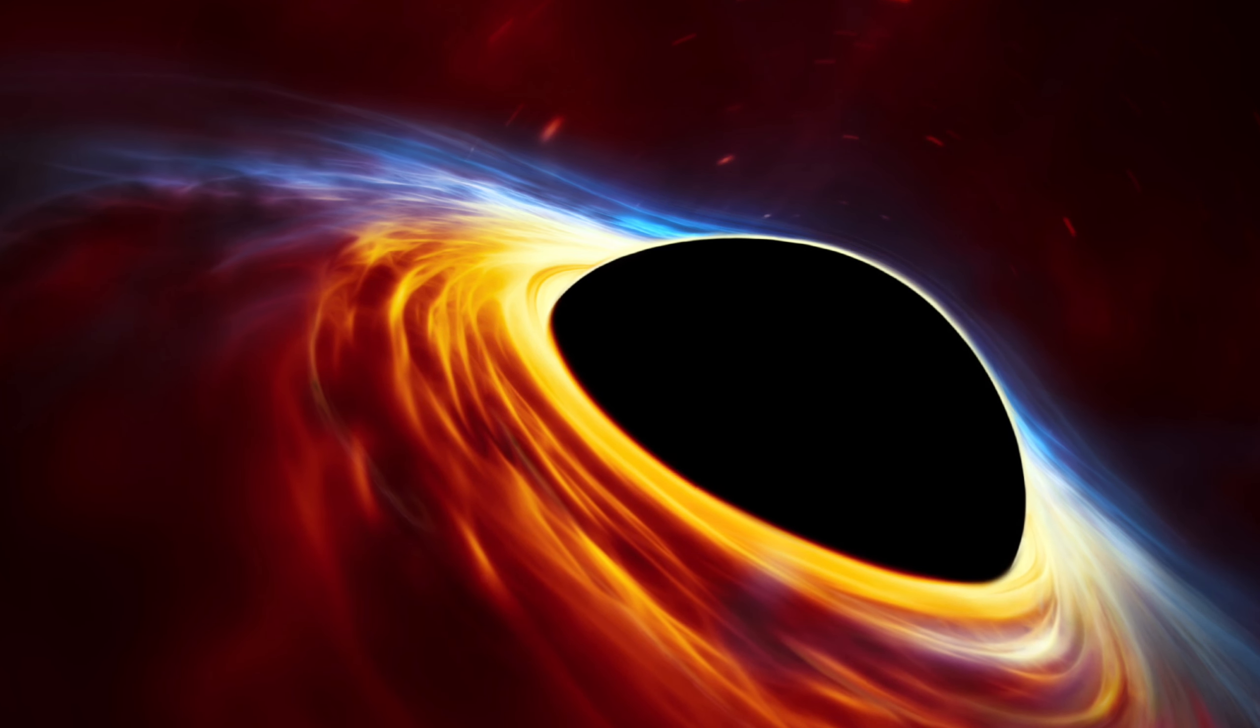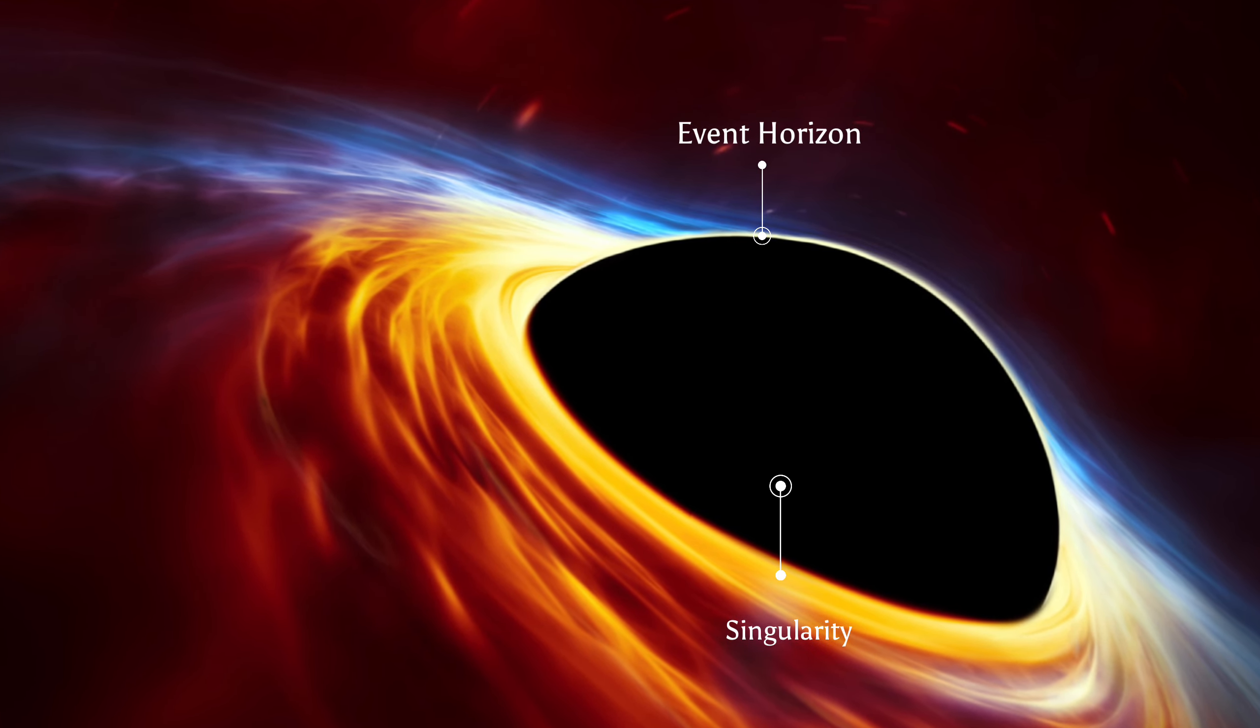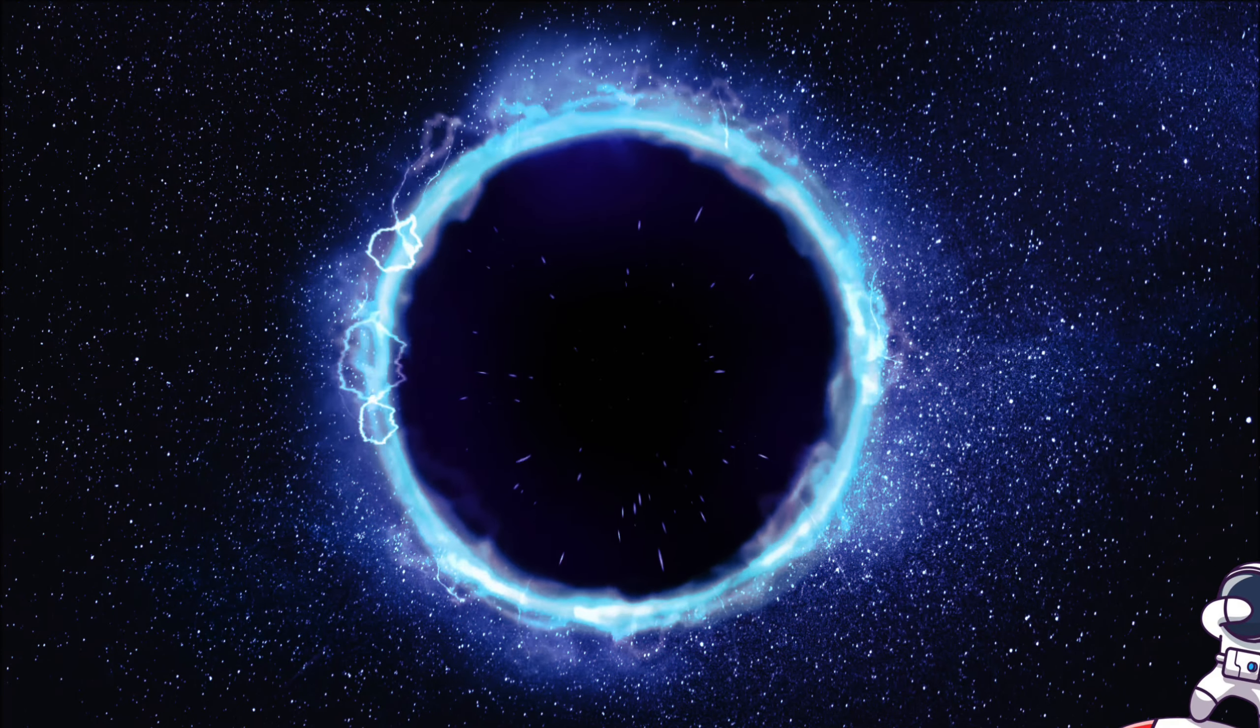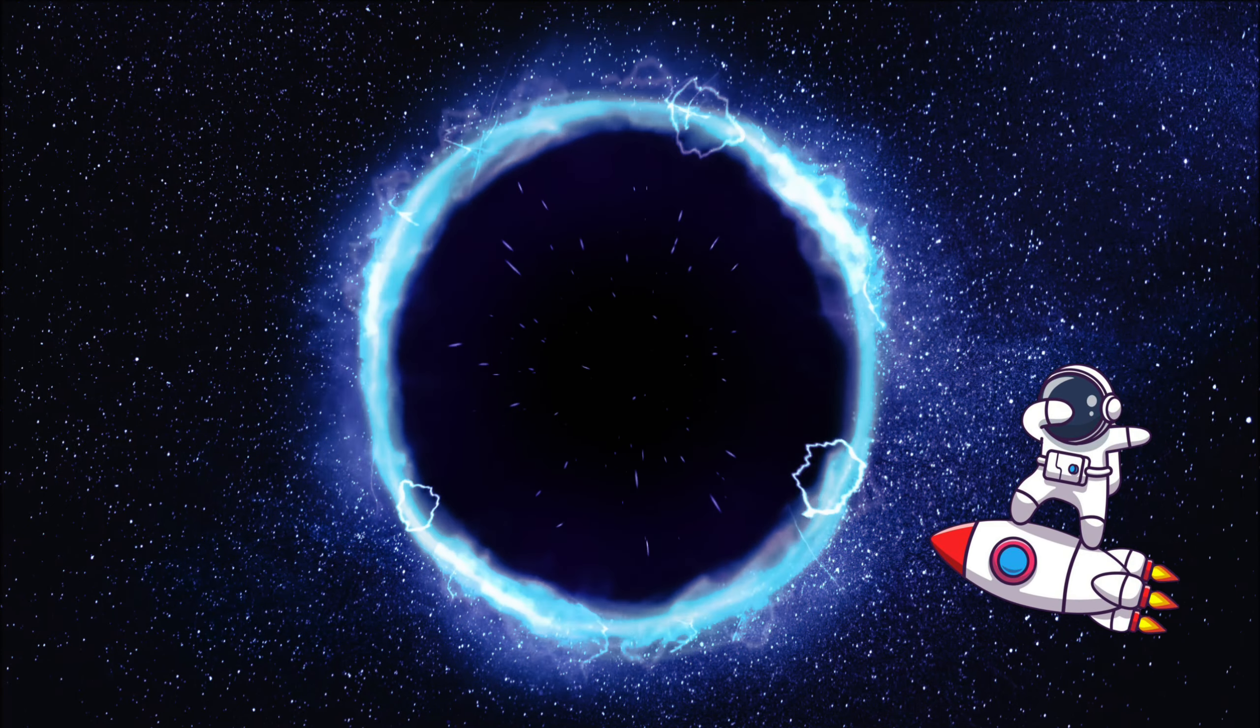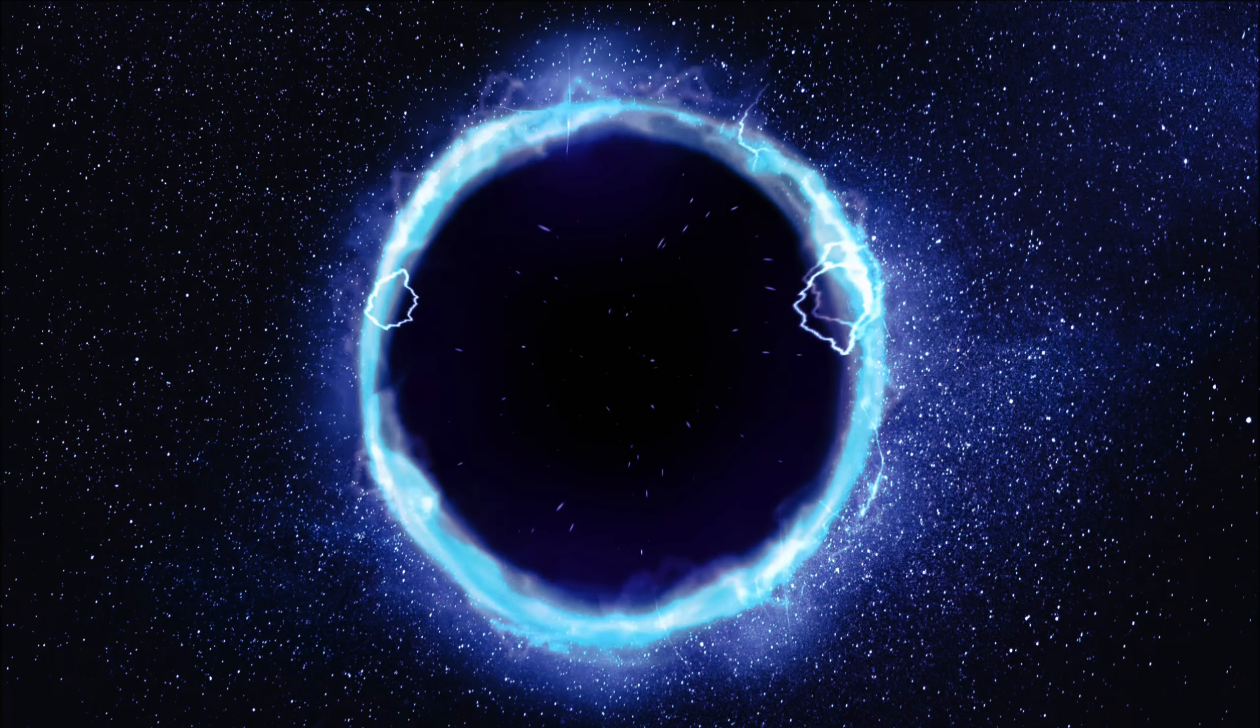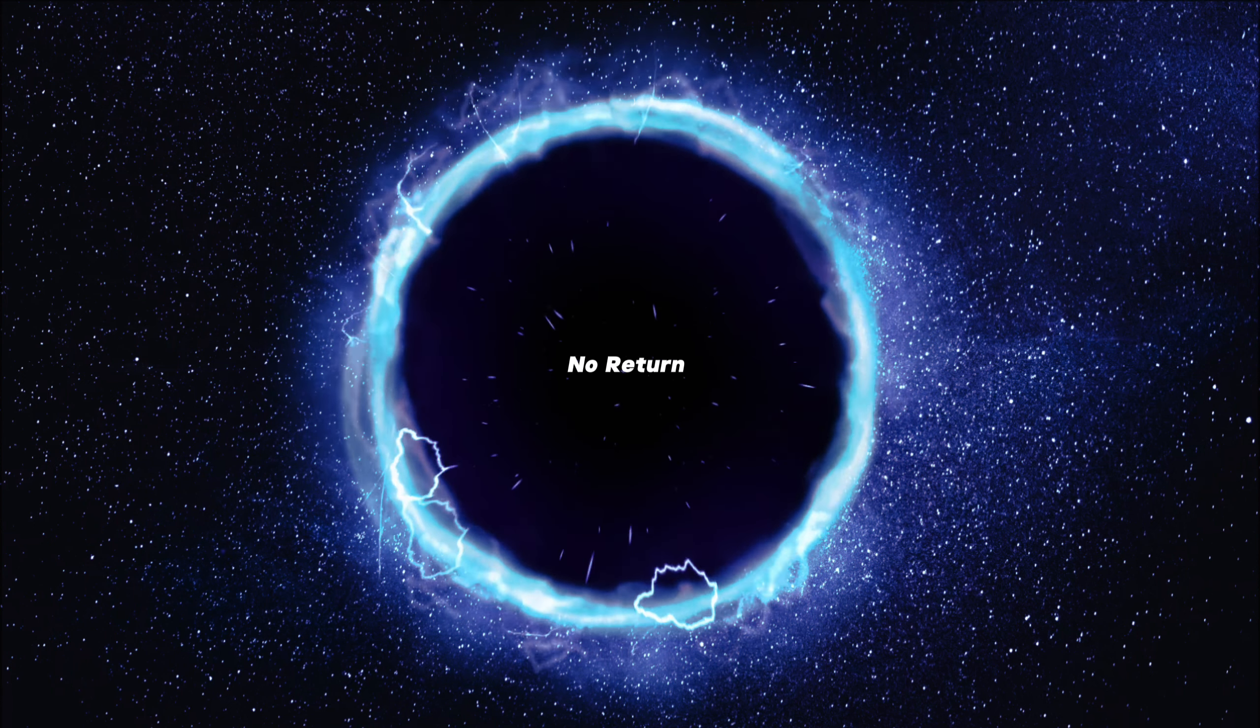Black holes have two parts, the event horizon and the singularity. Event Horizon - think of this as an invisible boundary around a black hole. If you get too close to it, it's like a trap. You can't escape. Not even light can get out once it crosses this boundary. It's like a point of no return.